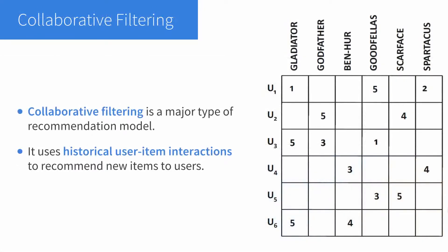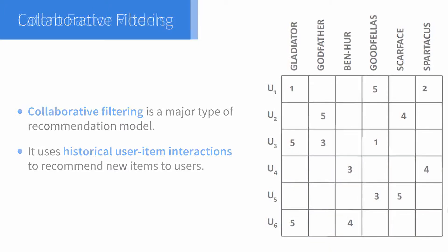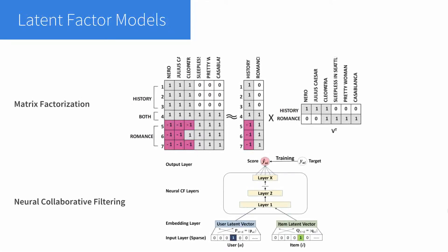Collaborative filtering is a basic and major type of recommendation model. It uses historical user-item interactions to recommend new items to users. Among various collaborative filtering methods, latent factor models have achieved state-of-the-art performance.